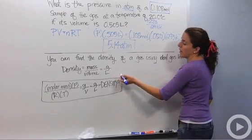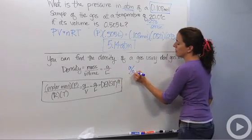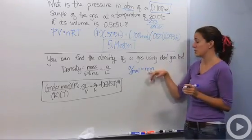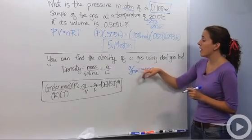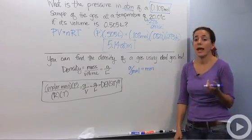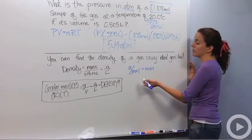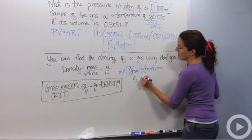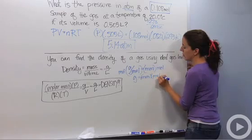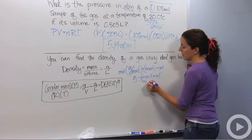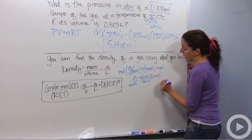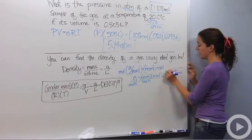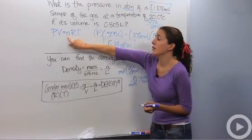All right, so we know grams per moles is equal to our molar mass. I'm going to isolate moles because in my ideal gas law I have moles. So I'm going to multiply both sides by moles. So grams equals molar mass times mole. But I want to isolate our moles so I'm going to divide by molar mass. So mole equals grams per molar mass. So in our ideal gas law, I'm going to substitute this N for grams per molar mass. So now I have pressure times volume equals grams per molar mass times RT.